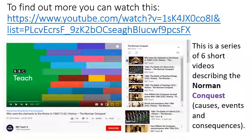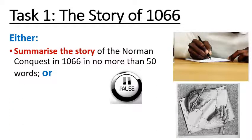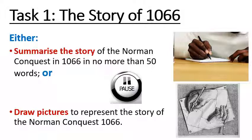If you want to find out more about the Norman Conquest, I recommend looking at the BBC Teach series — a series of six short videos describing the conquest, looking at the causes, events, and consequences. For task one, the story of 1066: you have two choices — either summarize the story of the Norman Conquest in no more than 50 words, or draw pictures to represent the story. You can press pause or go back through the video to help you.